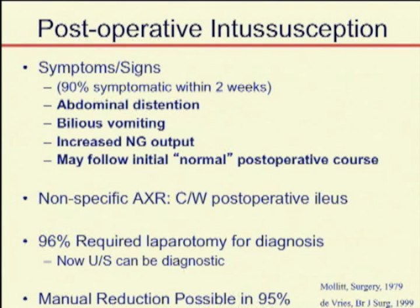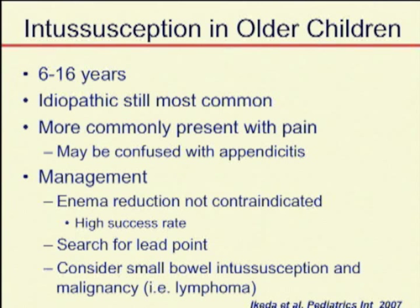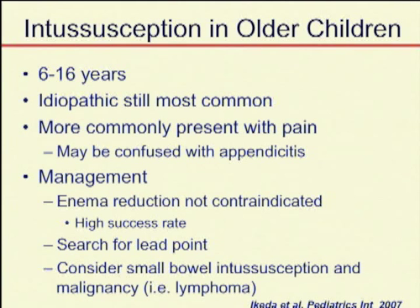Intussusception in older children presents differently. You certainly have a much greater incidence of pathologic lead points and malignancies, such as small bowel malignancies. But the idiopathic variety is still the most common. Keep in mind that enema reduction is not necessarily contraindicated in older children — it still has a relatively high success rate — but you have to be more fastidious in your search for a pathologic lead point.